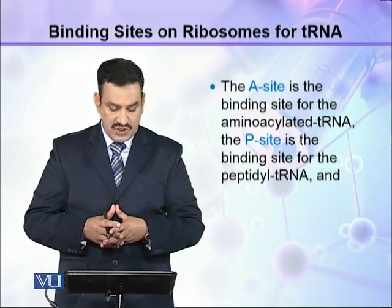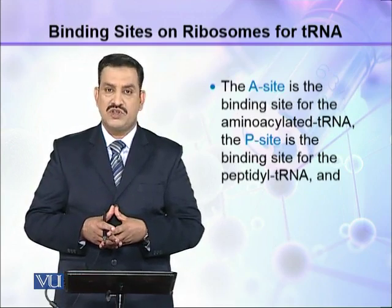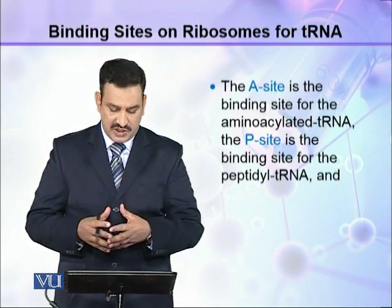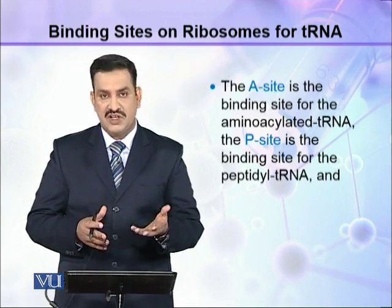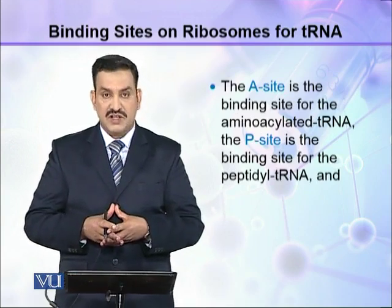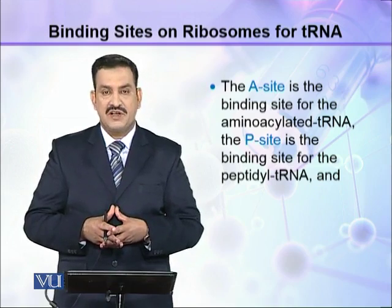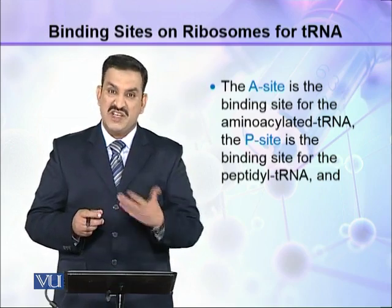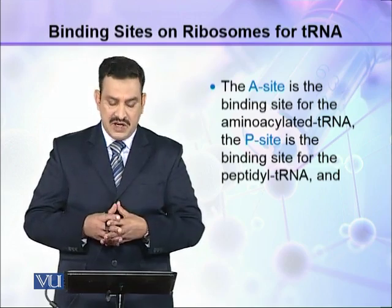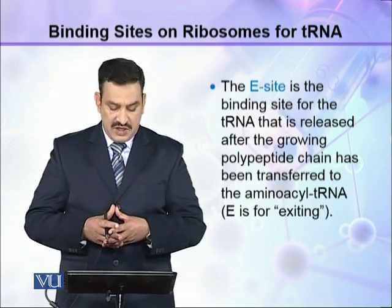The A site is the binding site for the aminoacyl tRNA. اسلیے اس کو A site کہتے ہیں amino acyl tRNA کی وجہ سے۔ The P site is the binding site for the peptidyl tRNA. اسلیے اس کو P site کہتے ہیں کیونکہ یہ peptidyl tRNA کے لئے ہے۔